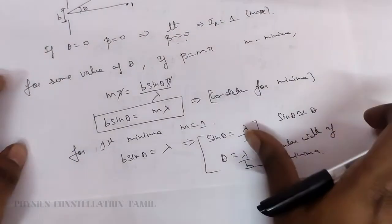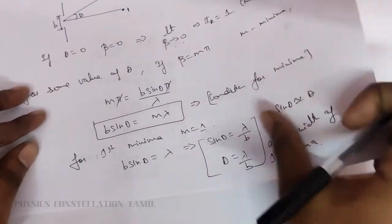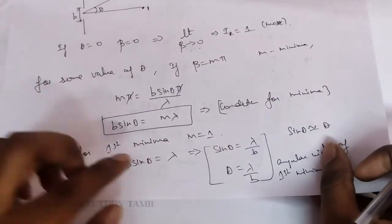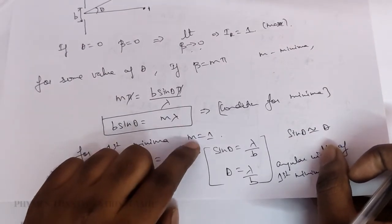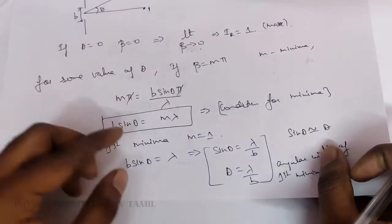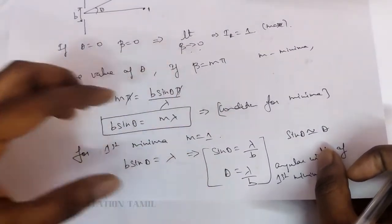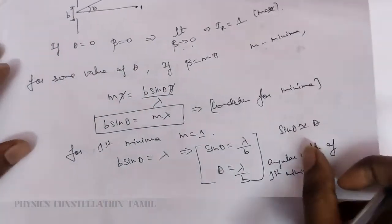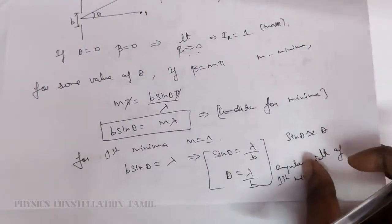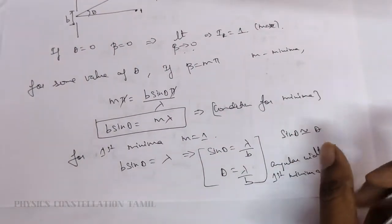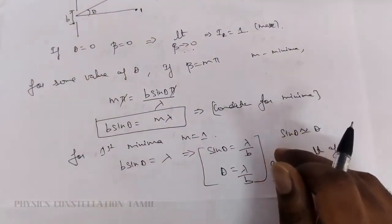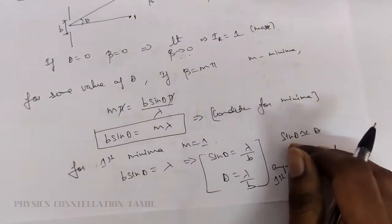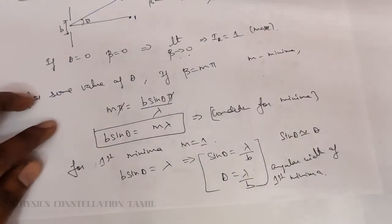For second minima, m equals 2; for third minima, m equals 3, and so on. This is the general equation for minima. This is the very important condition — the condition for diffraction minima due to single slit: B sine theta equals m lambda.